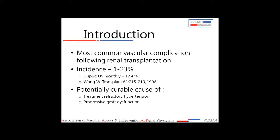Transplant renal artery stenosis, often called TRAS, is the most common vascular complication following renal transplant. The incidence varies from 1 to 23%, and this variation is because different methods and different criteria have been used to diagnose TRAS. If you do monthly Doppler in a post renal transplant patient for one year, the incidence is around 12.4%, whereas if you do Doppler only in symptomatic patients, the incidence is around 5.0%.